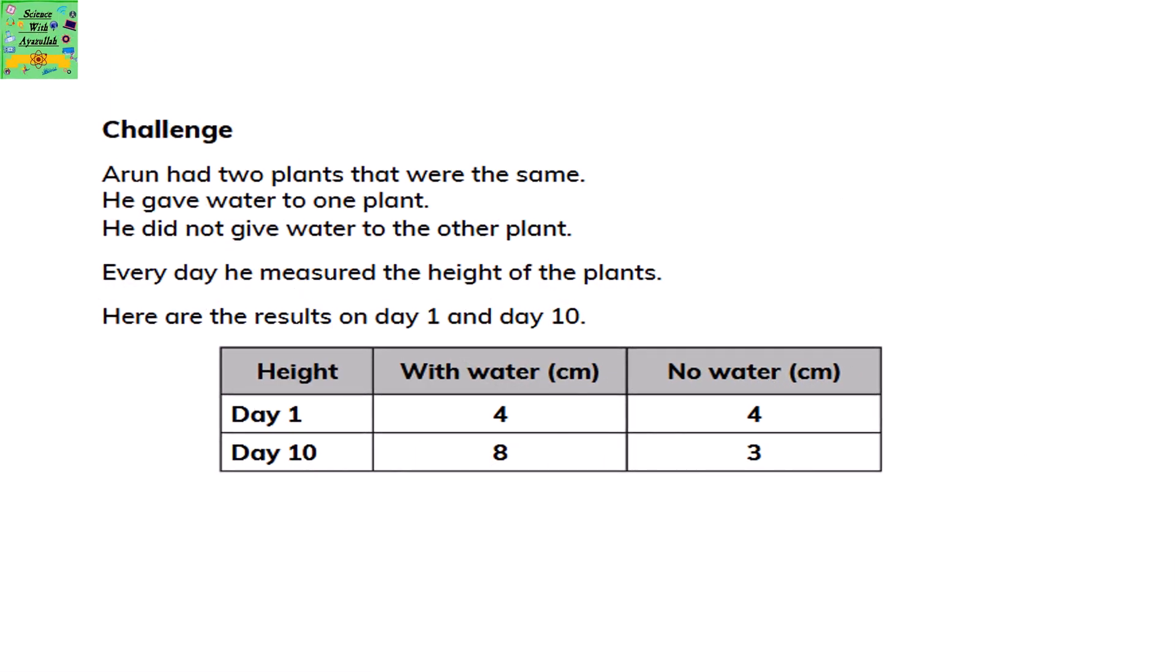Plant A had two plants that were the same. He gave water to one plant. He did not give water to the other plant. Every day he measured the height of the plants. Here are the results on day 1 and day 10. The height on day 1 with water was 4 cm and no water was 4 cm. On day 10 with water the height was 8 cm and with no water the height became 3 cm.